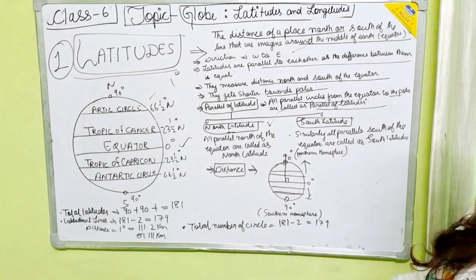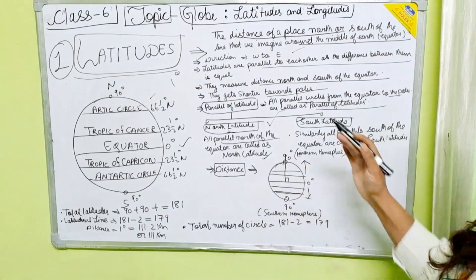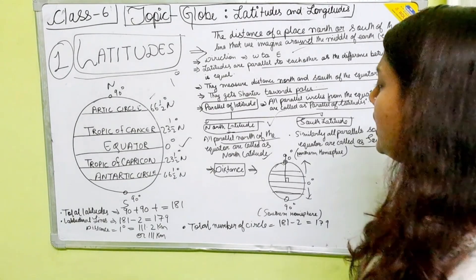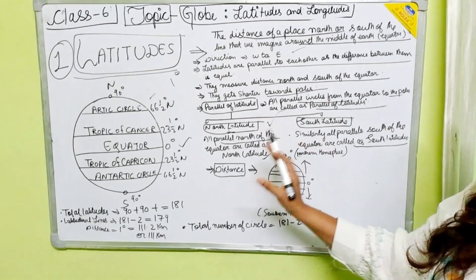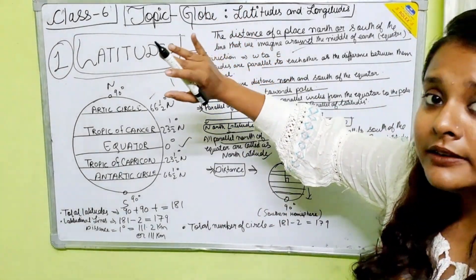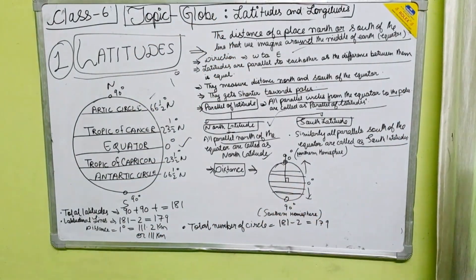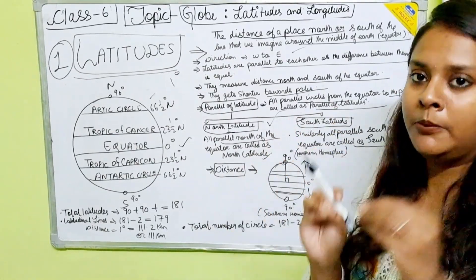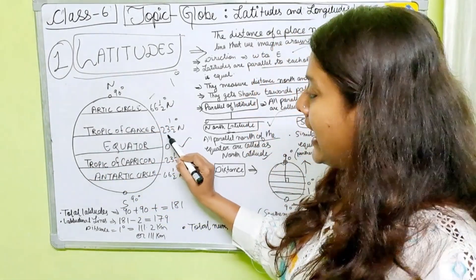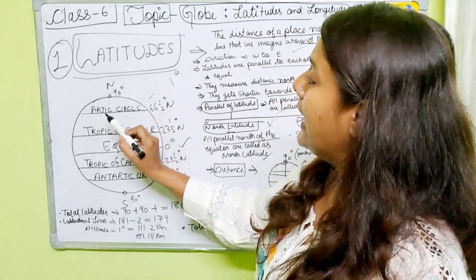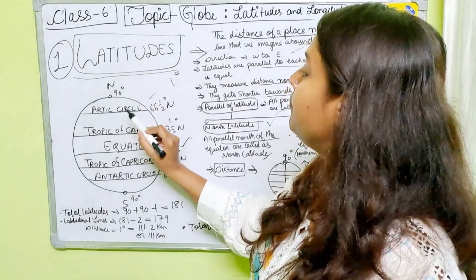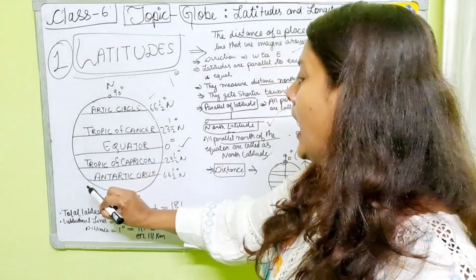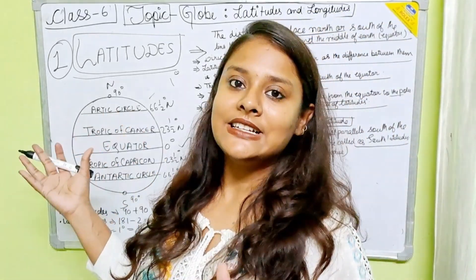There are many latitudes but we have to remember certain important ones: Arctic Circle, Tropic of Cancer, Equator, Tropic of Capricorn, and Antarctic Circle. The North Pole is 90 degrees, Arctic Circle is 66 and a half degrees, Tropic of Cancer is 23 and a half degrees, Equator is 0 degrees, Tropic of Capricorn is 23 and a half degrees, Antarctic Circle is 66 and a half degrees. We know that India lies in the Northern Hemisphere.